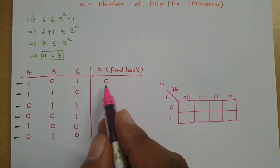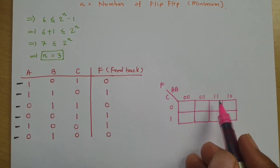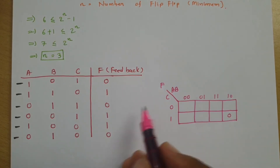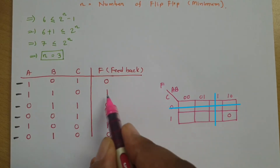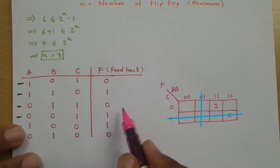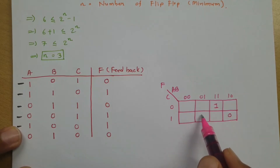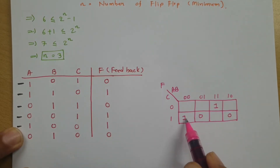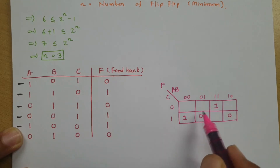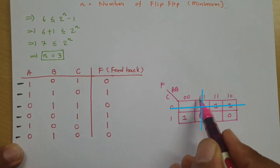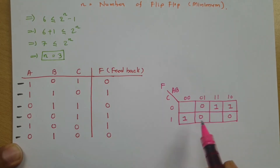Placing the data into the K-map: for state 101, f = 0; for state 110, f = 1; for state 011, f = 0 — wait, at that location f = 1; for state 001, f = 1; for state 100, f = 1; for state 010, f = 0. The remaining states (000, 111) are not defined, so those are don't-care conditions.